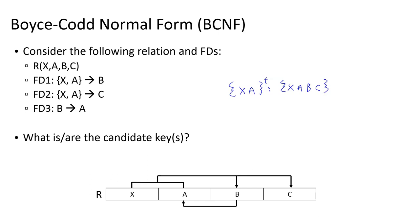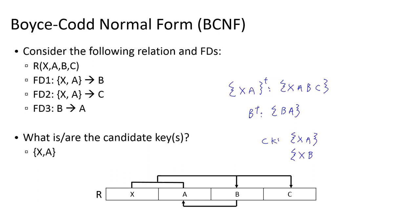So xa must be a candidate key. Let's also find the closure of b, which through reflexivity includes b, and through functional dependency three includes a. If we just know b and a, we cannot functionally determine any other attributes based on that. So far we know we have one candidate key of xa. We then ask: is any key attribute a dependent in any of our functional dependencies? In functional dependency three, b functionally determines a. So anywhere we have an a, we could put a b, meaning we have a second candidate key of xb.